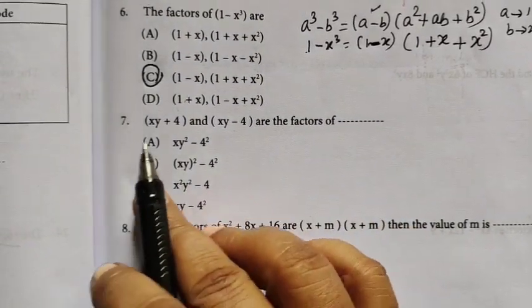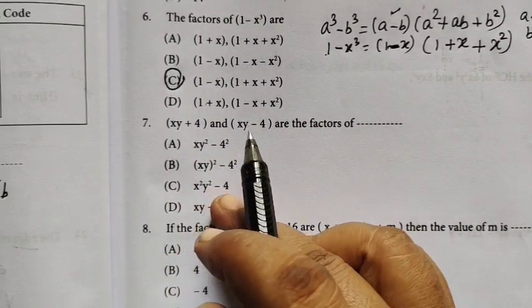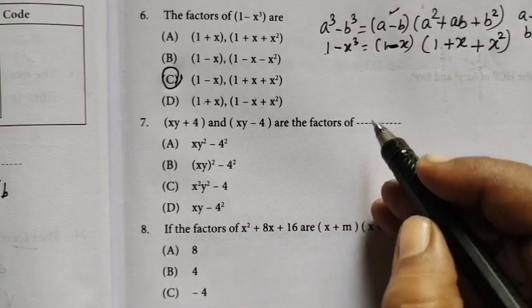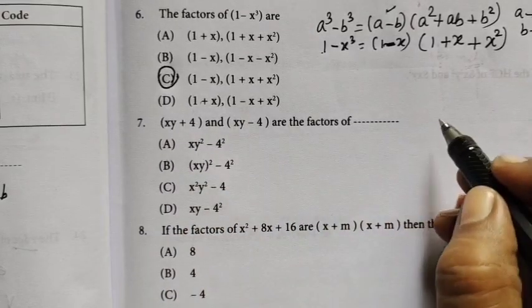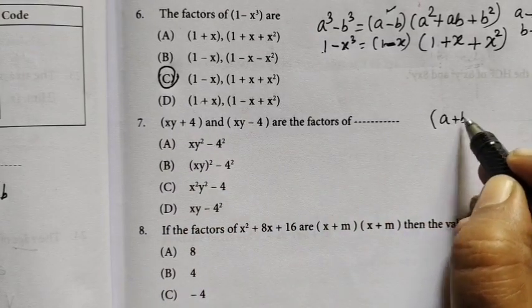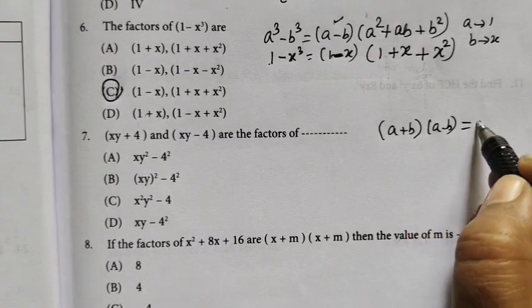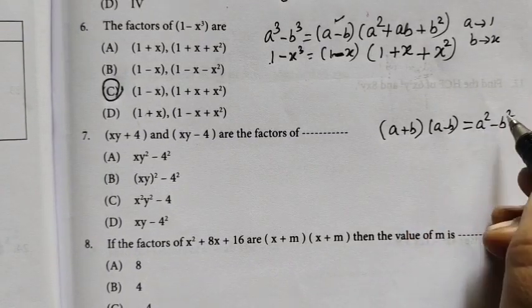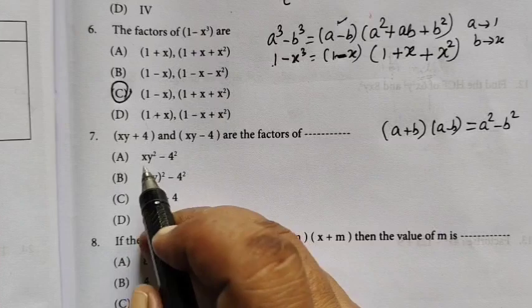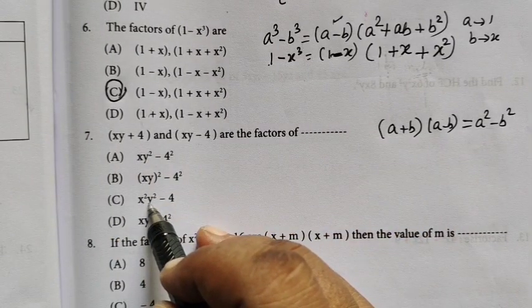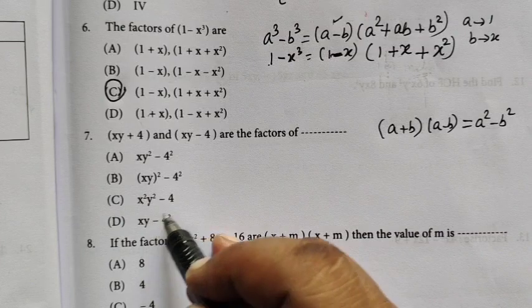xy plus 4 and xy minus 4 are the factors of. This is of the form a plus b into a minus b. This is of the form identity. We can remember. Here's this. Here's the form, the form 4 squared.